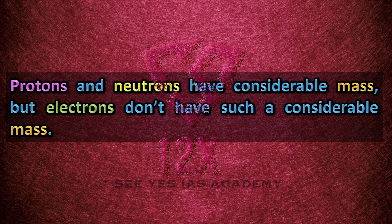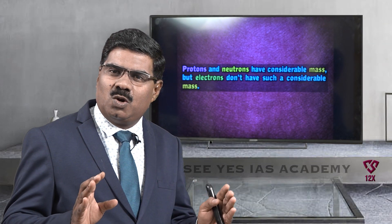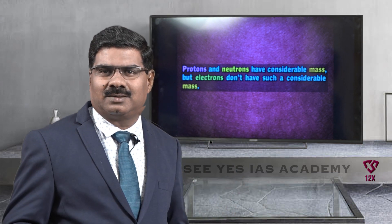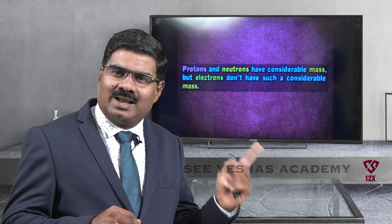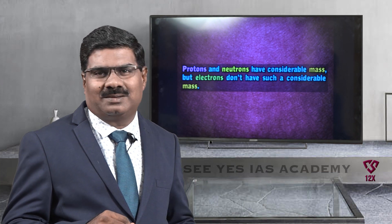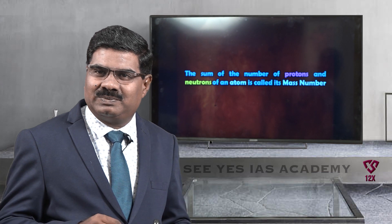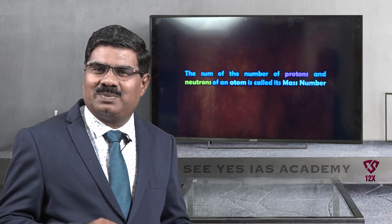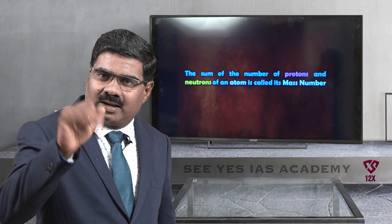Protons and neutrons have considerable mass, but electrons don't have such a considerable mass. The sum of the number of protons and neutrons of an atom is called its mass number or atomic mass A.